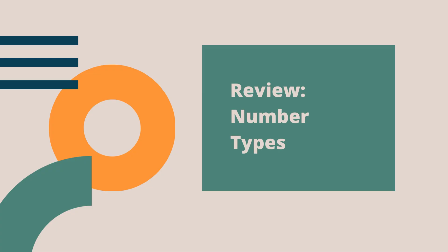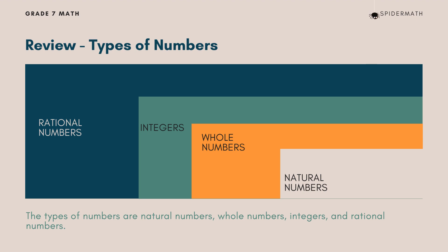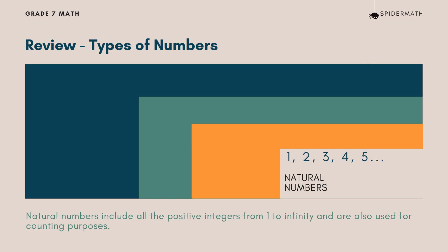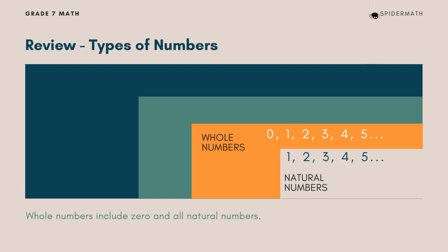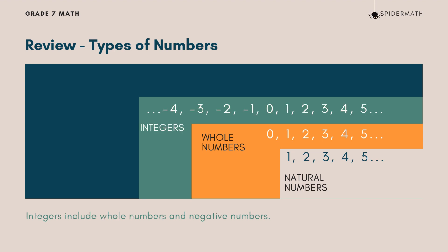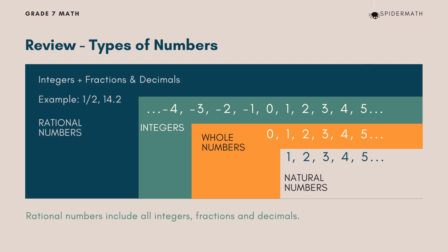Before we proceed, we'll first review the types of numbers. The types of numbers are natural numbers, whole numbers, integers, and rational numbers. Natural numbers include all the positive integers from 1 to infinity, and are used for counting purposes. Whole numbers include 0 and all natural numbers. Integers include whole numbers and negative numbers. Rational numbers include all integers, fractions, and decimals.